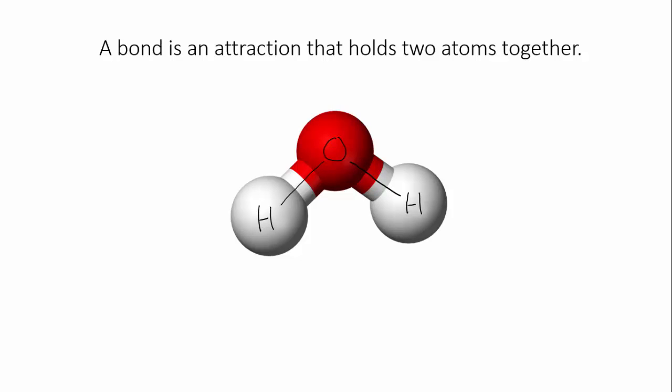It's because of chemical bonding that our universe contains more than just the hundred-odd naturally occurring elements that we know to exist. Bonding turns elements into compounds, and gives us the almost infinite variety of different substances that we encounter every day.